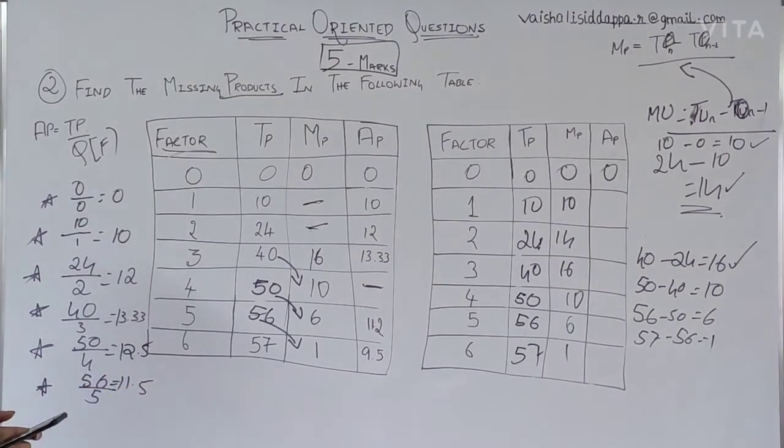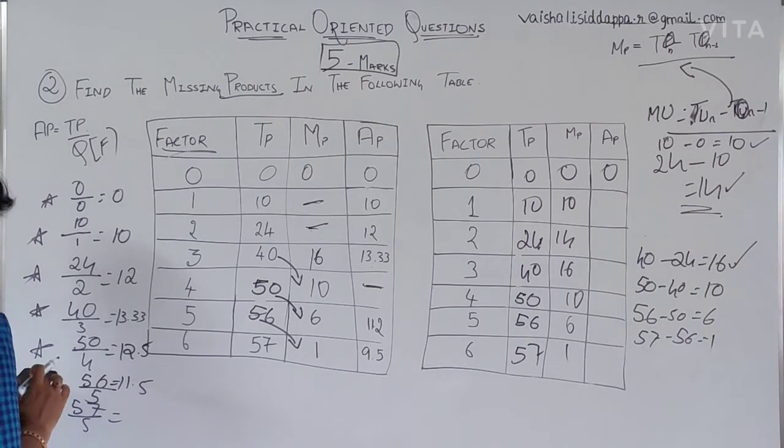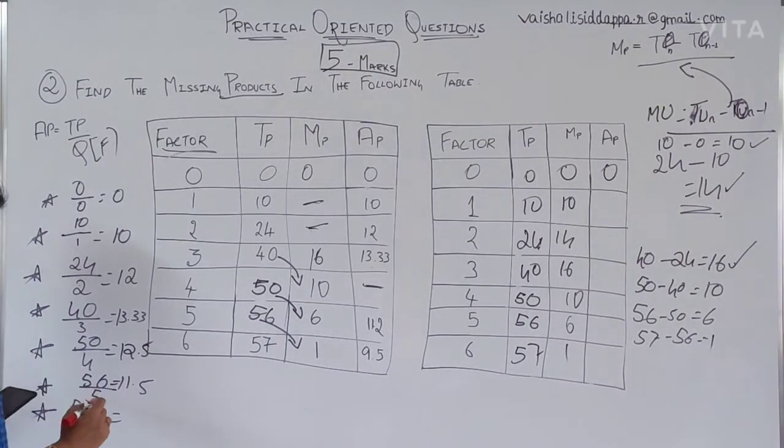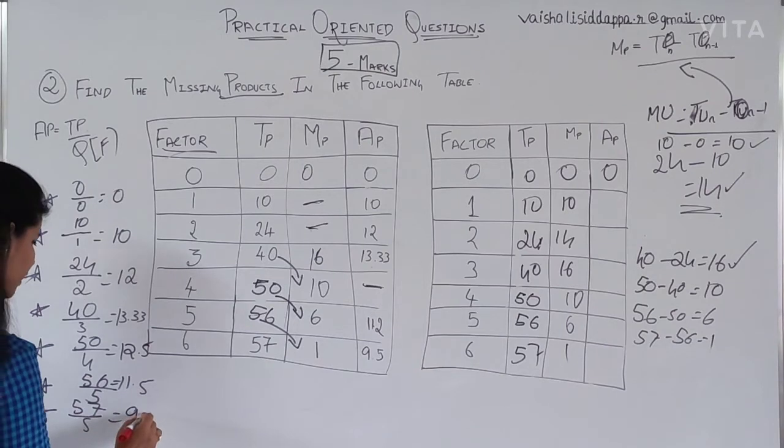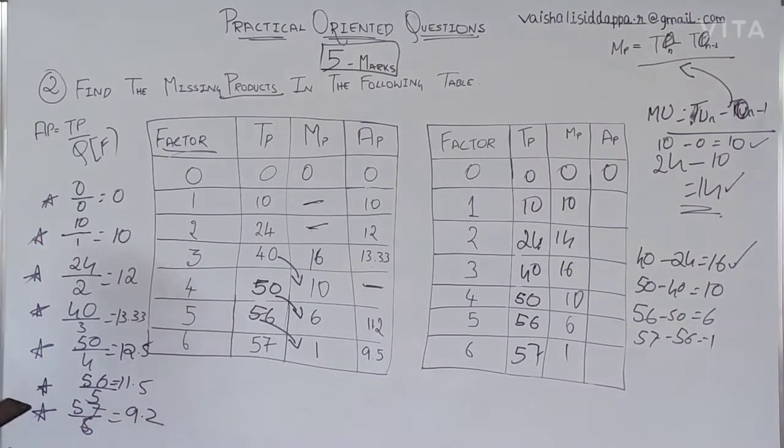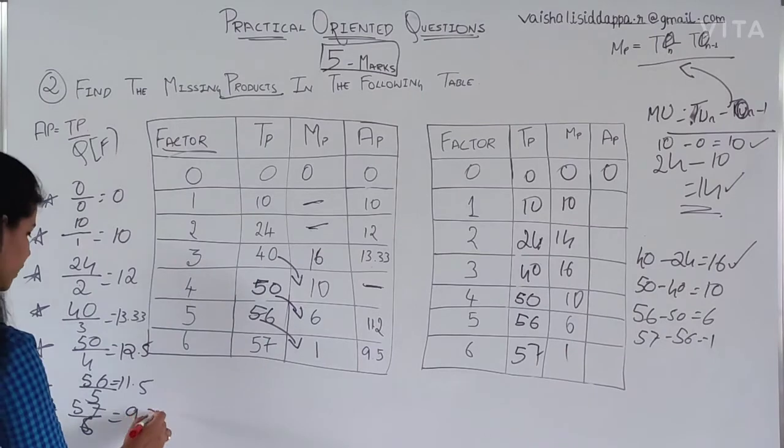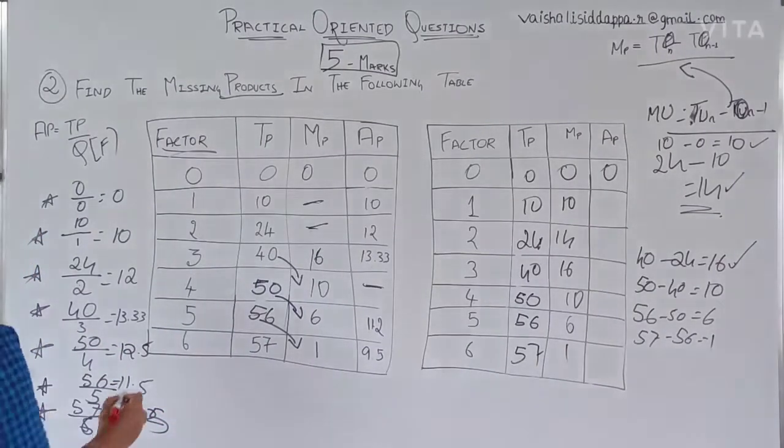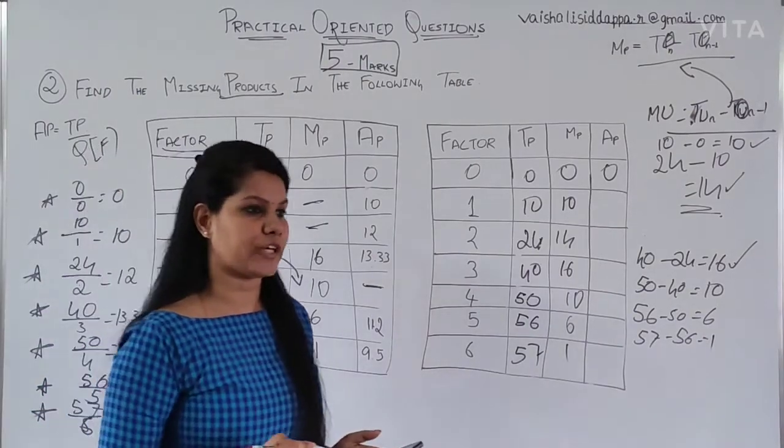11.2. The last one, which is 57 by 6 is equal to 9.2. This is 6. So, this is the way. Sorry. This is 9.5. So, this is the way how you are going to find out the actual values of it.